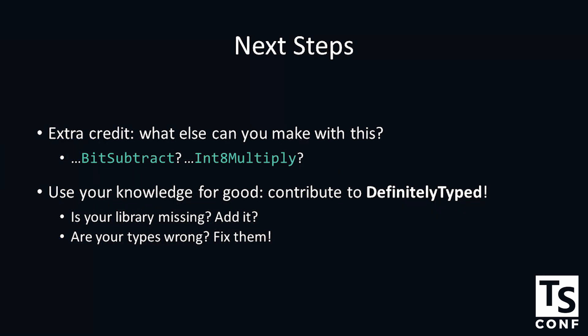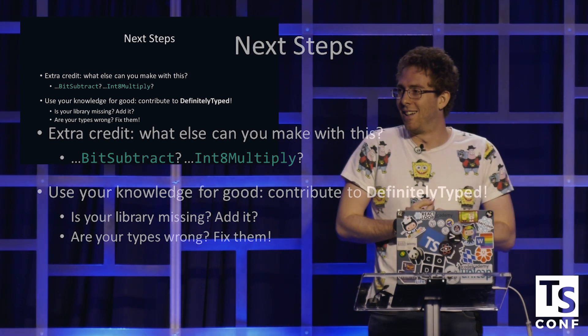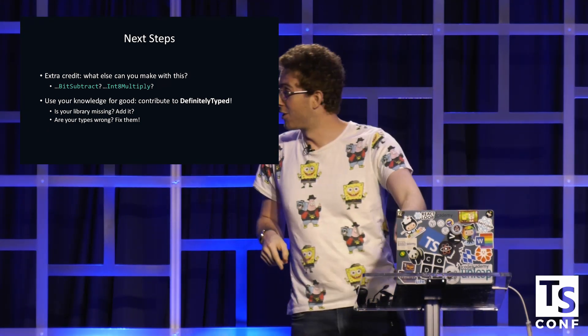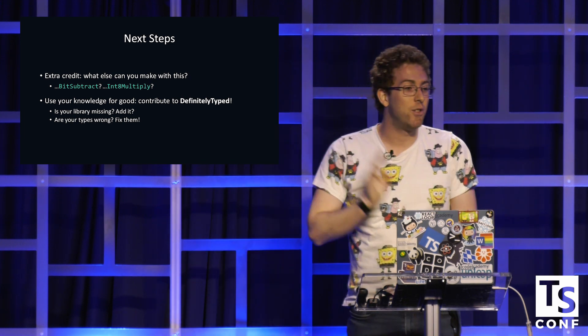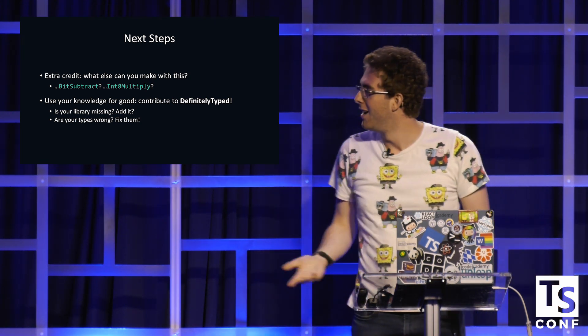So what would you actually want to use with this information? You could go further. You could bit subtract, you could int8 multiply. There's probably a division possibility in there depending on how you want to deal with rounding and floating point numbers. You could probably represent floating point numbers. You could contribute to DefinitelyTyped. You're all masters in the type system now. You could totally use this knowledge for good. If you use a library and somehow it's still not on DefinitelyTyped and not in TypeScript itself, you could contribute that library. Now that you know everything about the type system, you could totally write anything you want there. You could submit pull requests to improve existing definitions. See, this topic was useful after all.